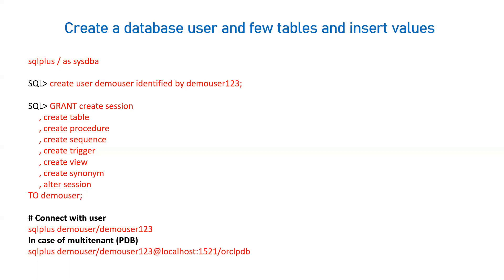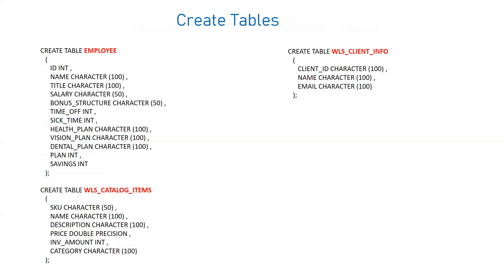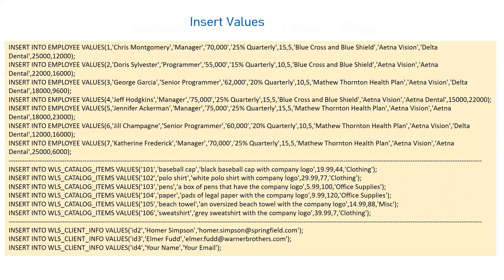To connect with your user, the command is: SQL Plus user slash password. If you are using multi-tenant architecture with a PDB in your database, the command is: SQL Plus user slash password @host:port/PDB_name. By this way, you can create a user and connect with the database. Once connected, we create three tables in the database — one named employee, second WLS catalog items, and third WLS client info — and then insert some dummy data into all three tables.